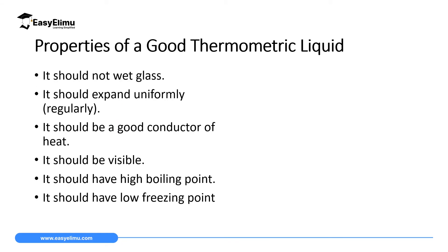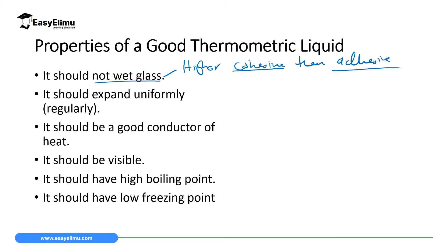What are the properties of a good thermometric liquid? The first property is that it should not wet the glass. Substances which do not wet the glass have a higher cohesive force than adhesive force, so the liquid used must have a higher force of cohesion than force of adhesion. It should also expand uniformly — remember water undergoes anomalous expansion, so a good thermometric liquid should not have anomalous expansion. It should expand and contract regularly.